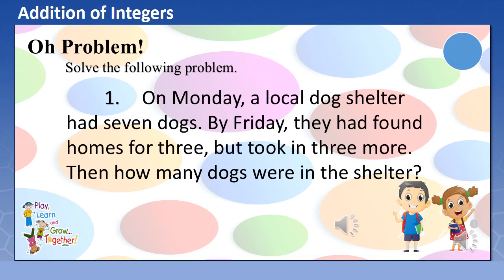Fifth category: O Problem. Simply solve the following problem to get your one point. On Monday, a local dog shelter had seven dogs. By Friday, they had found homes for three, but took in three more. Then how many dogs were in the shelter?